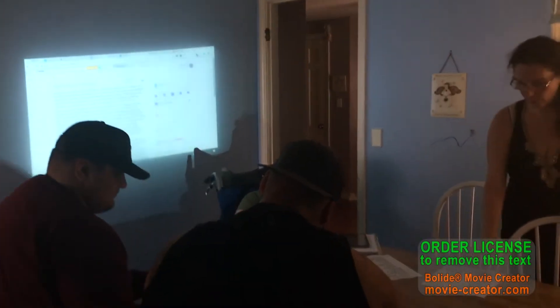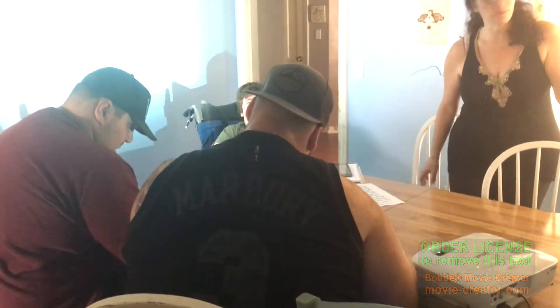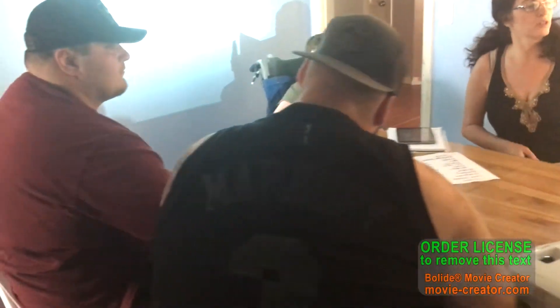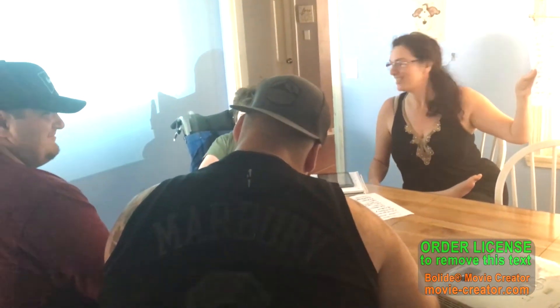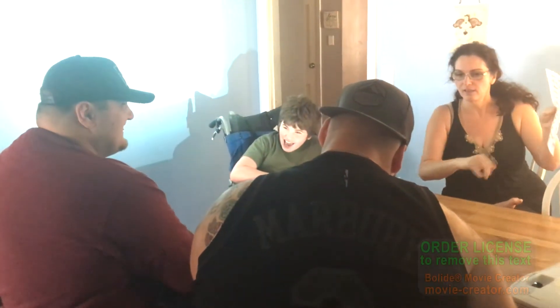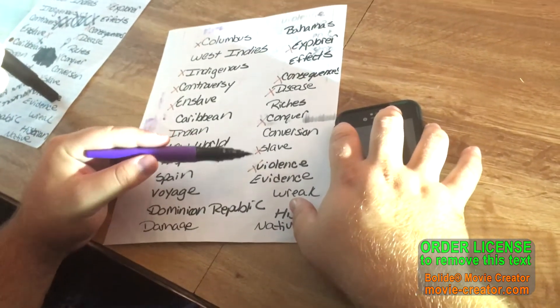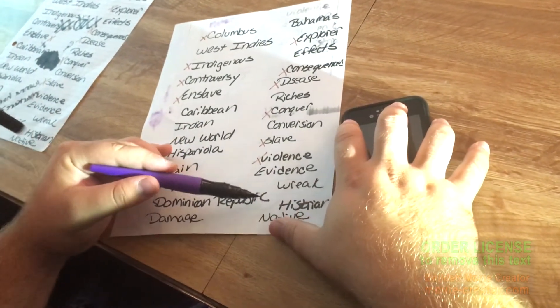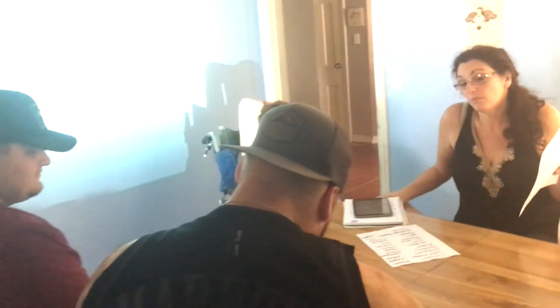So let's see the words. We have: Columbus, West Indies, Indigenous, Controversy, Enslaved, Caribbean, Indian, New World, Hispaniola, Spain, Voyage, Dominican Republic, Damage, Bahamas, Explorer, Effects, Consequences, Disease, Riches, Conquer, Conversion, Slave, Violence, Evidence, Greek, Historian, Native — a lot of words. Some you've seen and heard before, some are probably new for you. The ones with the X's are the ones I want you to pay close attention to.